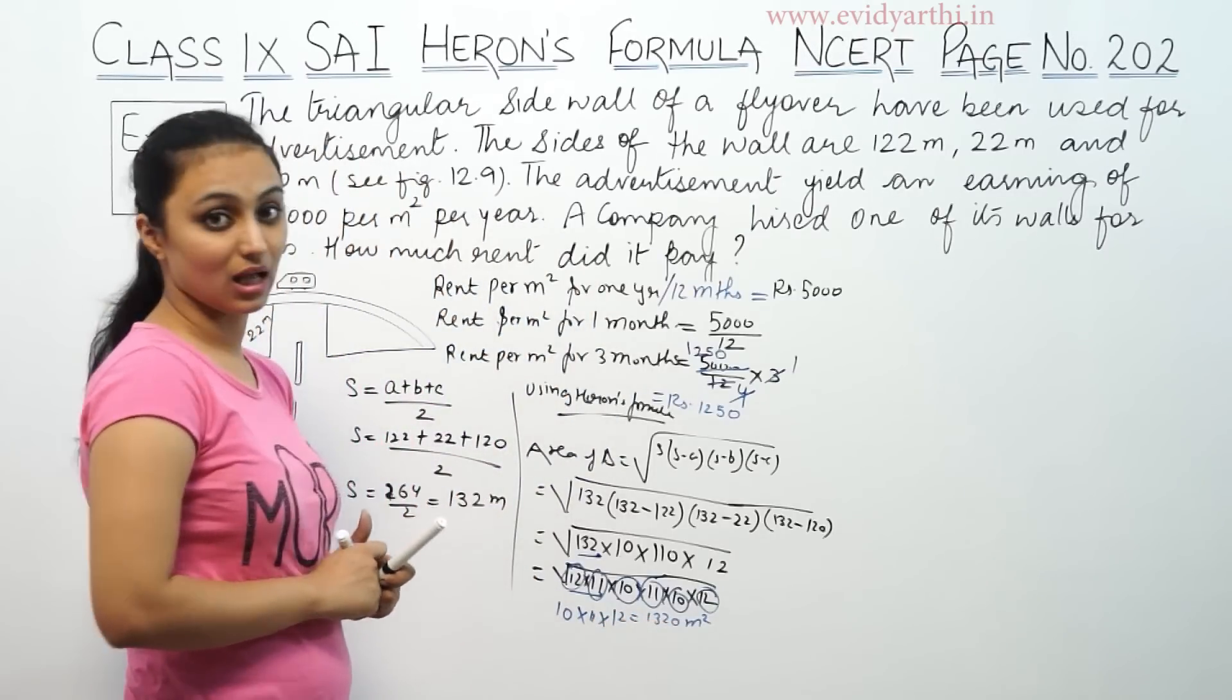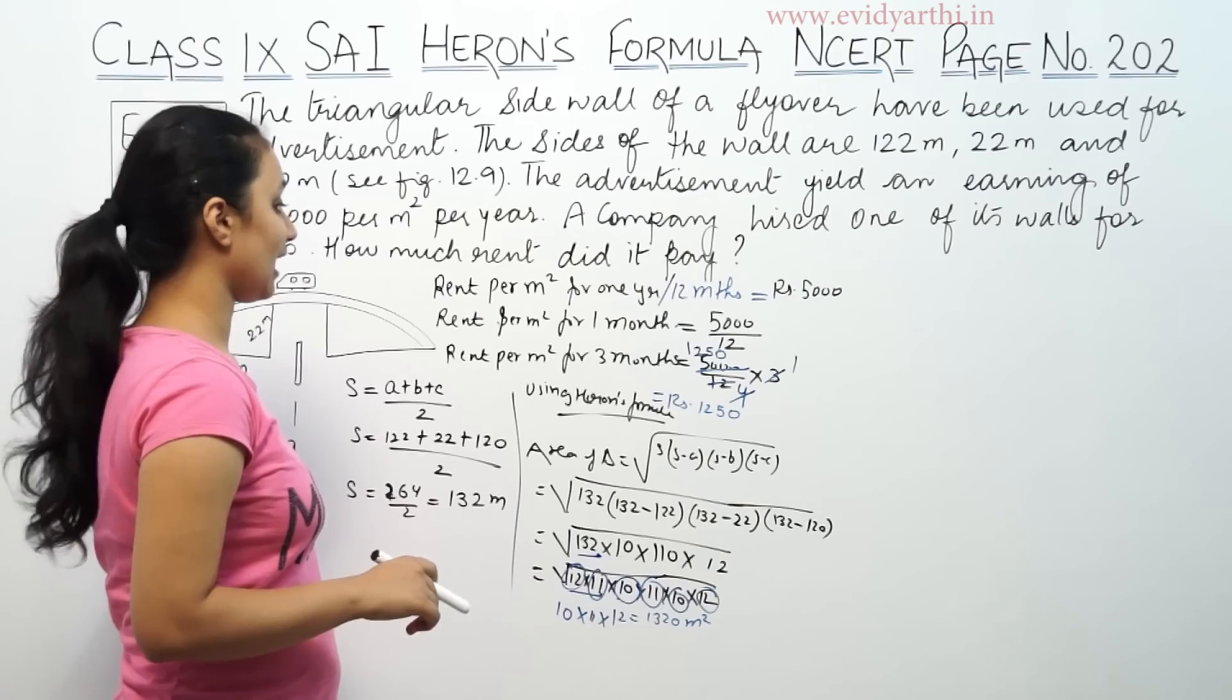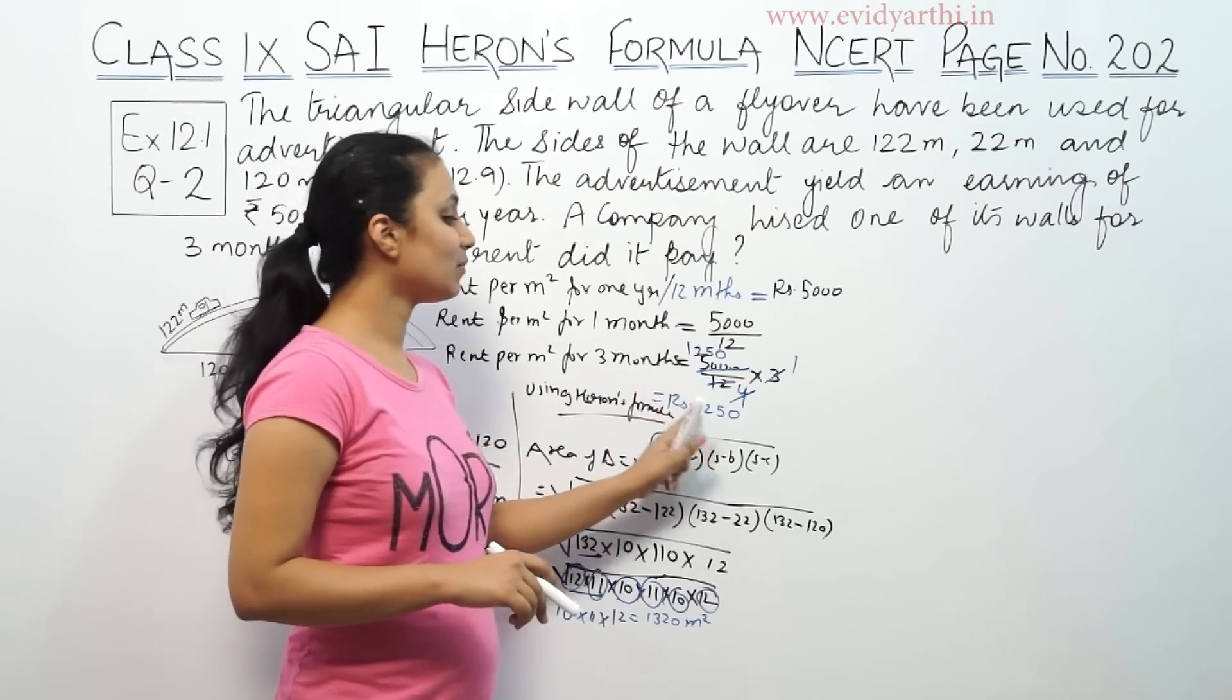So this is 1320 meters squared. This is the area. So the whole area is 1320 square meters.